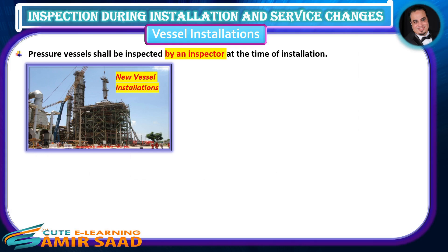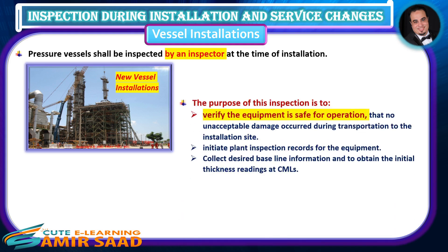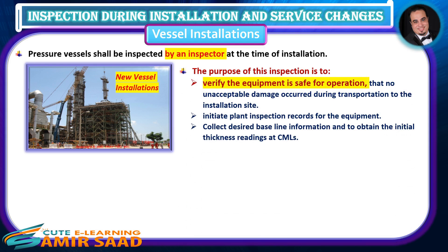Inspection during installation and service changes. Pressure vessels shall be inspected by an inspector at the time of installation. The purpose of this inspection is to verify the equipment is safe for operation, that no unacceptable damage occurred during transportation to the installation site, to initiate plant inspection records, collect desired baseline information, and to obtain the initial thickness readings at CMLs.